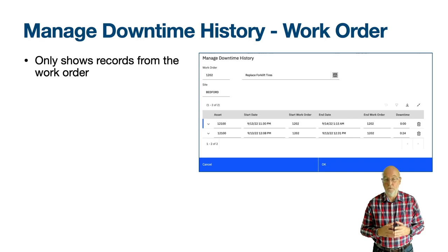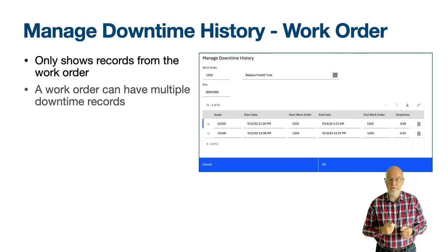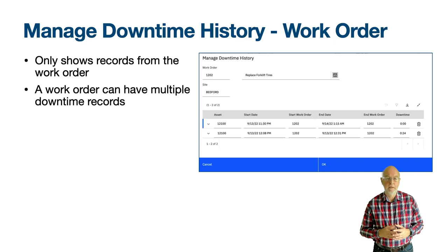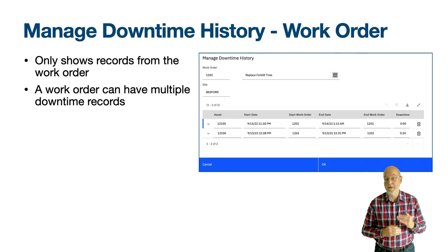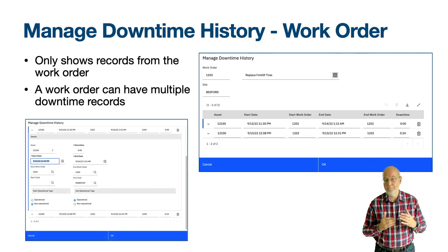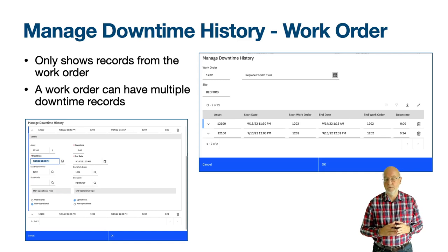The work order may have multiple periods of downtime. There might be a period of operational downtime and a period of non-operational downtime. There might be a period when a temporary fix was put in place and another period when a part was replaced to create a permanent fix, if that was all performed on the same work order. The work order used to report the asset was down need not be the same work order which reported the asset as now up. It is the details area of the Manage Downtime History action which helps to show that each downtime record is, in fact, made up from two transactions from the AssetStatus object and table.